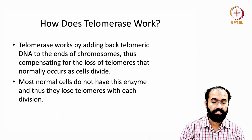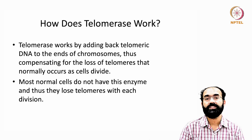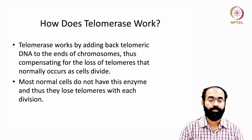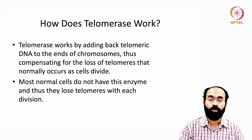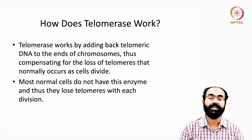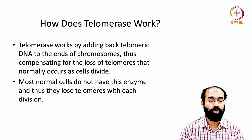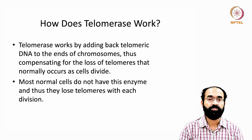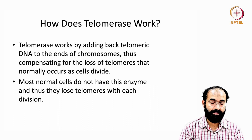Most normal cells do not have this enzyme and thus they lose their telomeres with each division. We saw in the previous class that telomeres around 11 KB long at the embryonic stage eventually become around 4 KB in old age. Also, not every chromosome has an equal length of telomere, and their rate of decline will also not be the same.